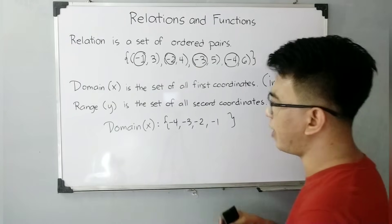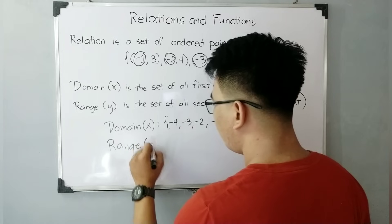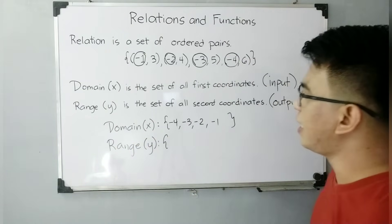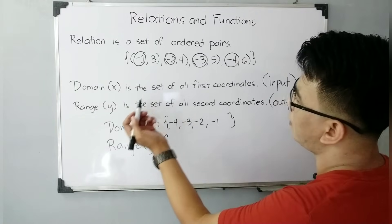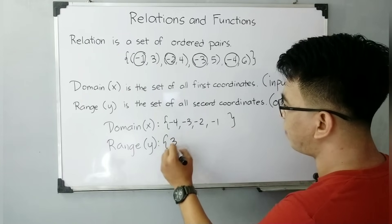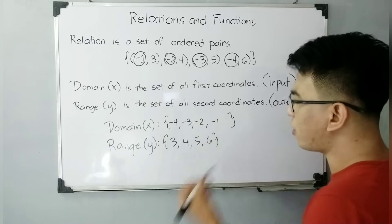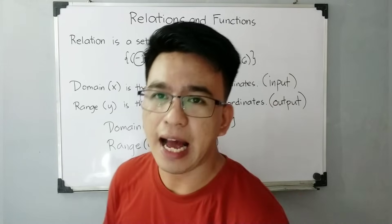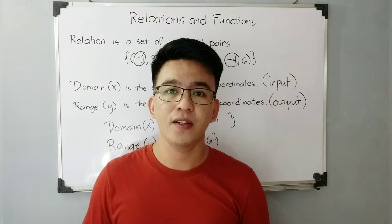And for the range, Y — we know that range is the set of all second coordinates. So we look at the second coordinates: we have 3, 4, 5, and 6. So if you arrange that, we have 3, 4, 5, and 6. That is our domain and range. In the next part of our video, I will give you the different ways on how to represent a relation.